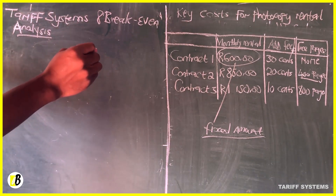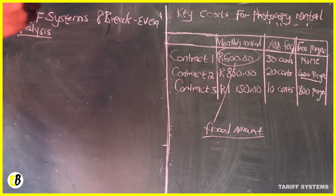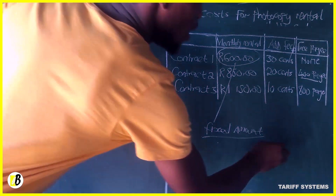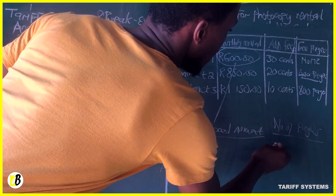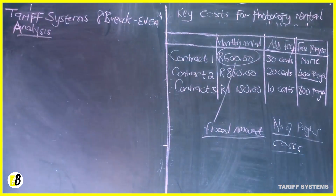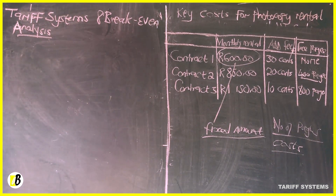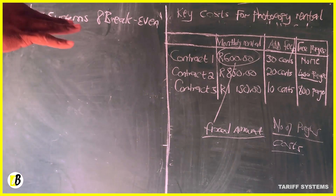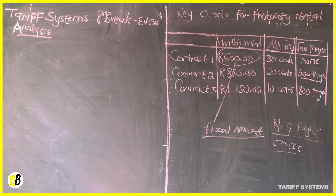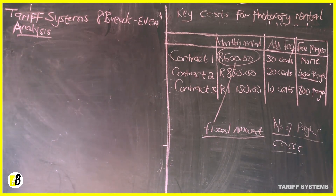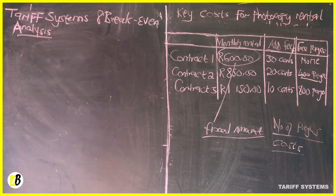The number of pages is an independent variable and the cost is a dependent variable, because the cost depends on the number of pages you get. The question that may come will be to calculate the total cost for contract number one, number two, and so on. What I want to teach you today is how to determine the formula in order to calculate this total cost.